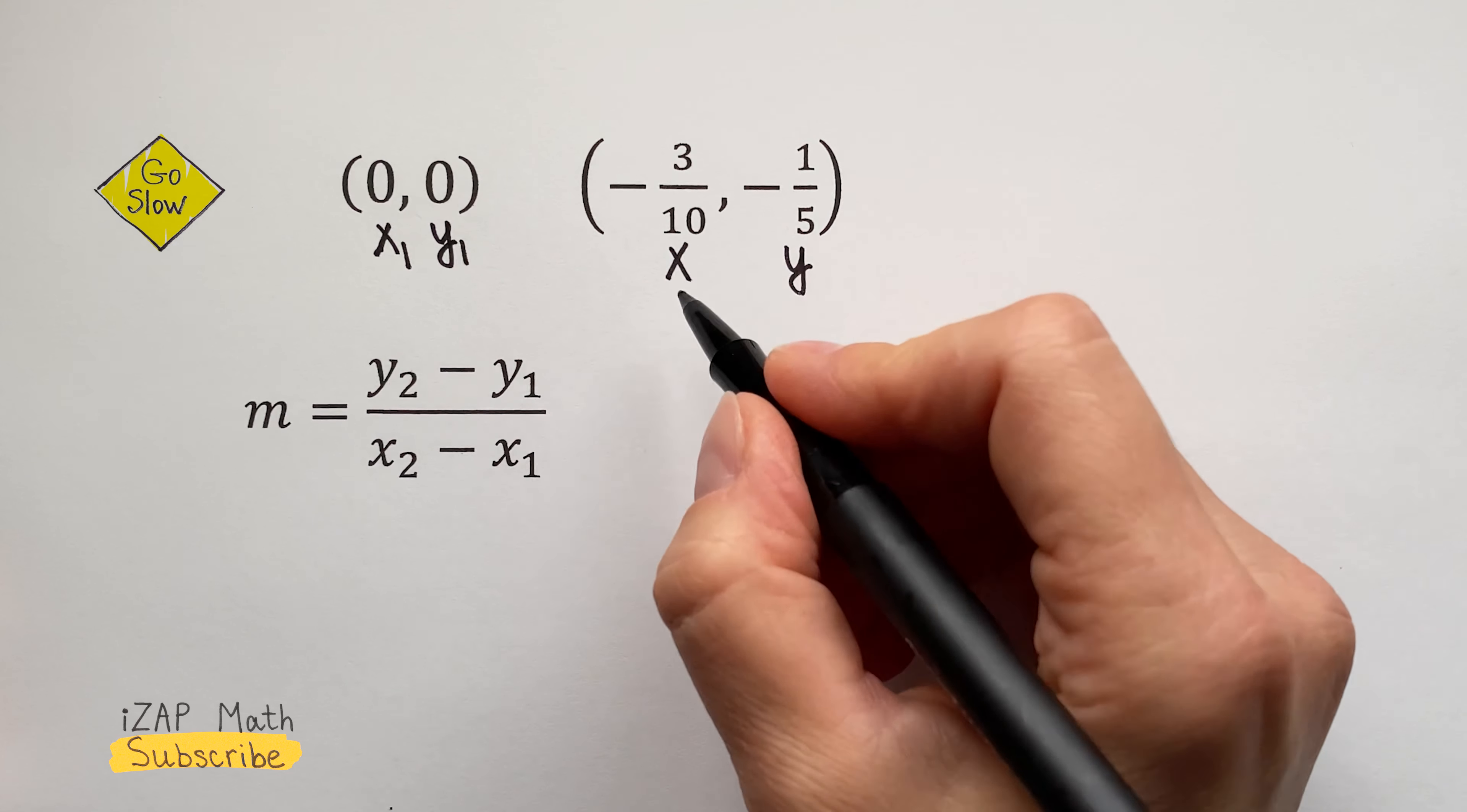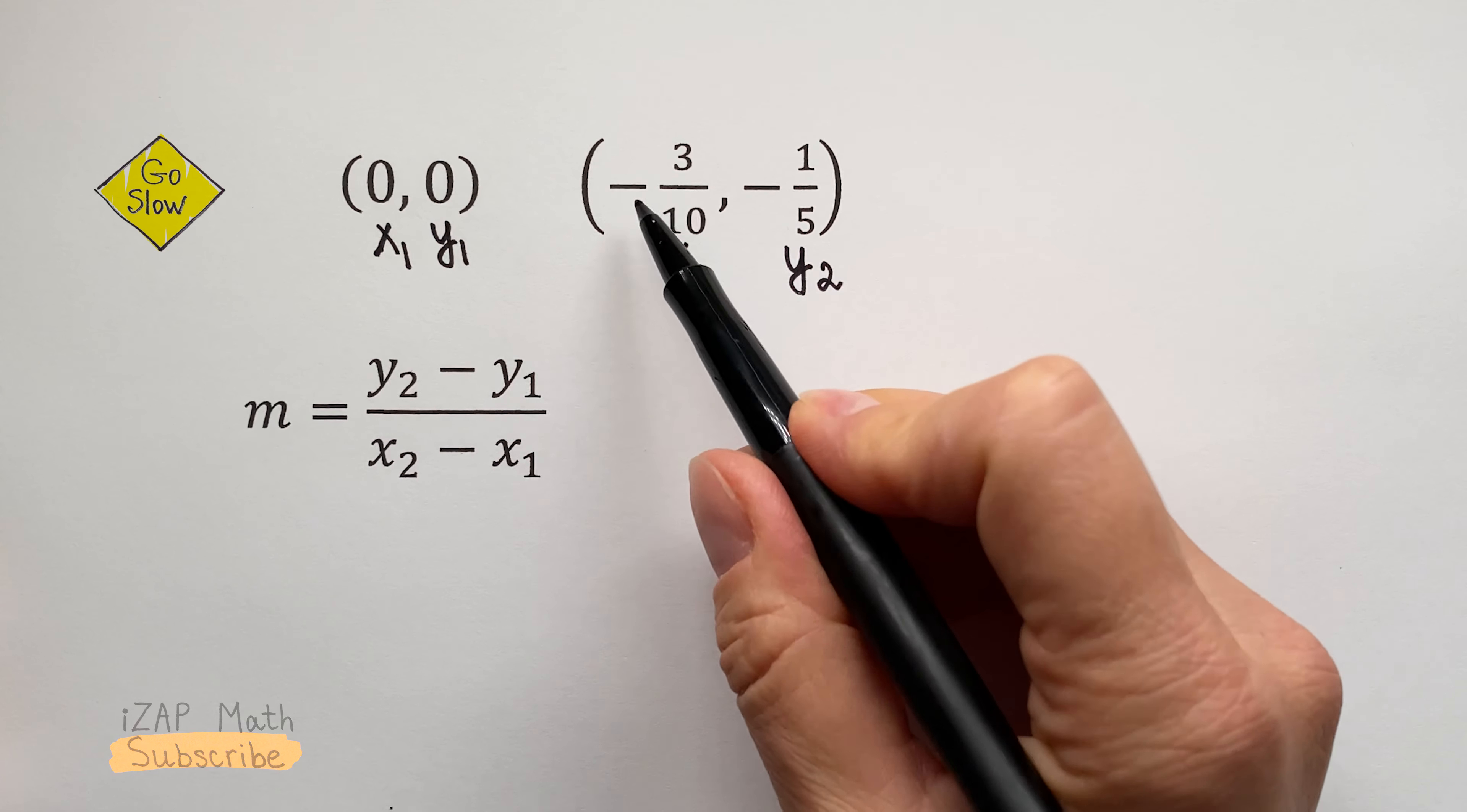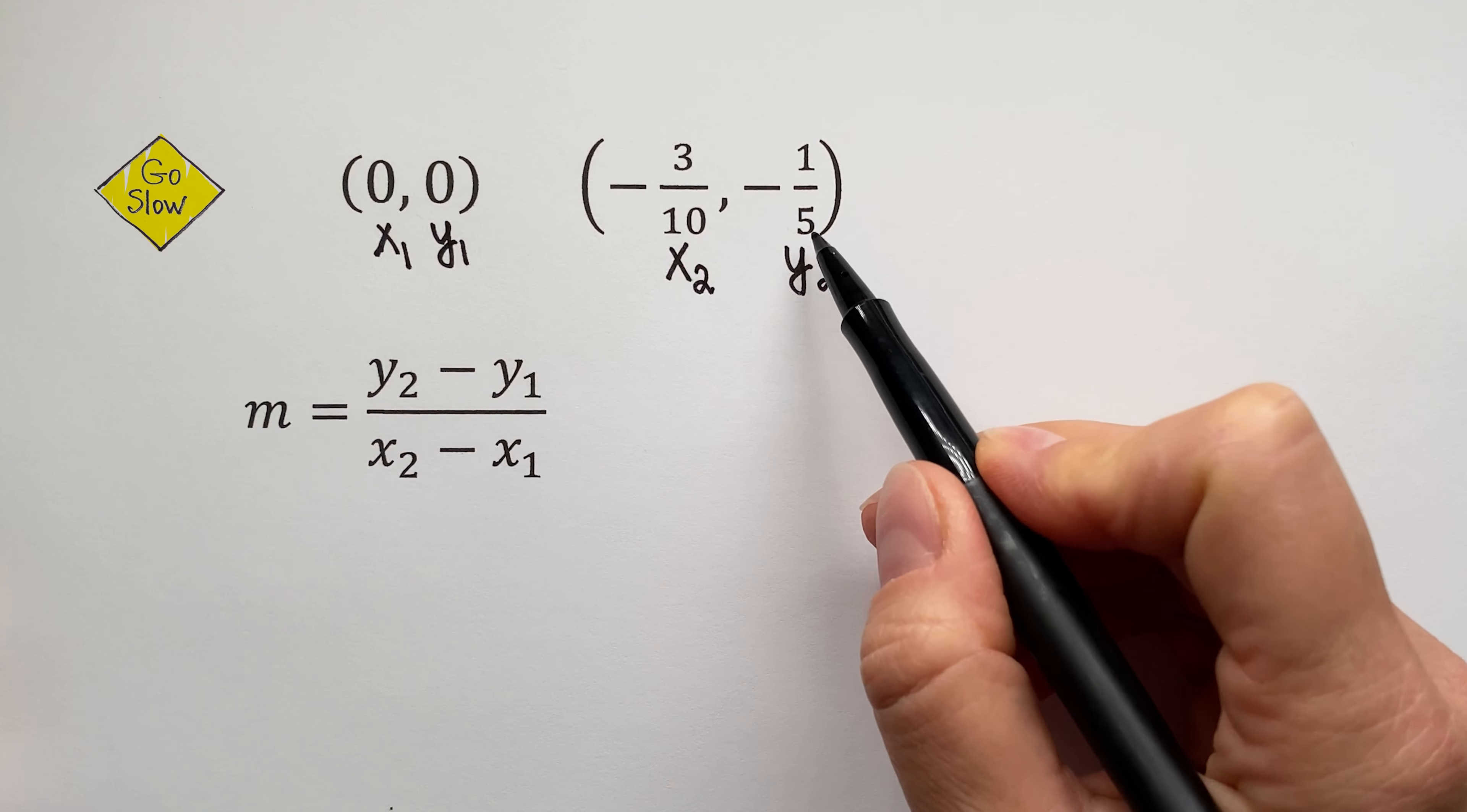Then let's label the second point as x2, y2. Then x2 equals negative 3 tenths, and y2 equals negative 1 fifth.